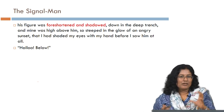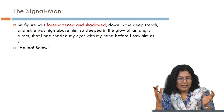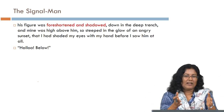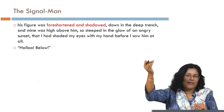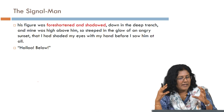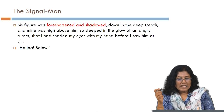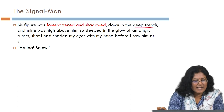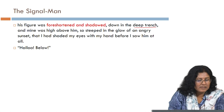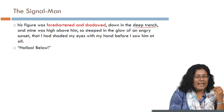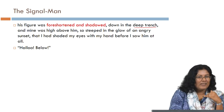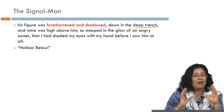The narrator tells us that the signal man's figure was foreshortened and shadowed down in the deep trench, while the narrator stood high above him, so steeped in the glow of an angry sunset that he had to shade his eyes before he saw him at all. This 'Hello below' refrain is very important to the story, and we will come to know it is associated not only with the narrator but also with the spectre that is going to haunt the story.